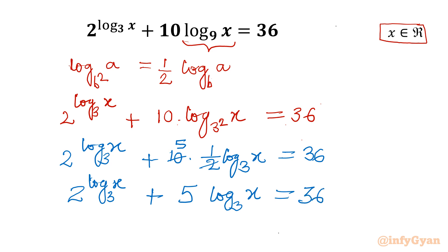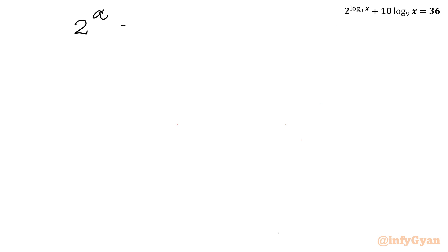Now let us consider a substitution. Let a = log x base 3. So this equation becomes 2^a plus 5a equal to 36, where our substitution is log x base 3 = a.